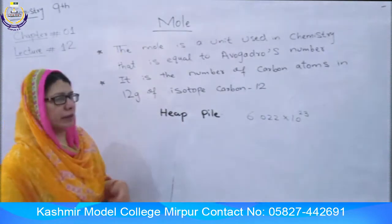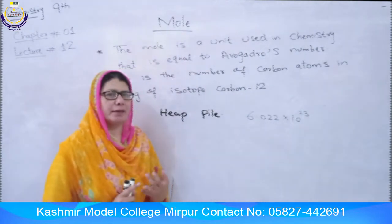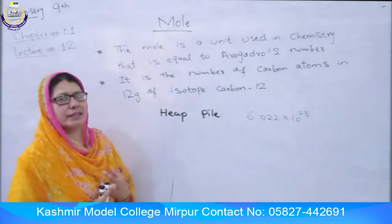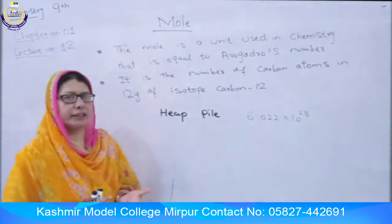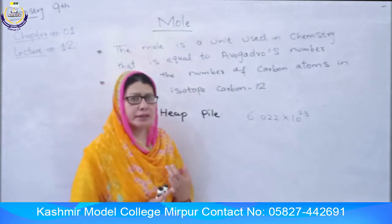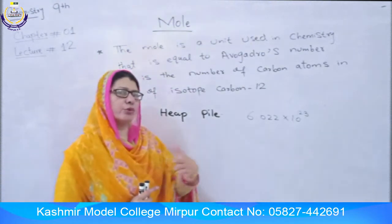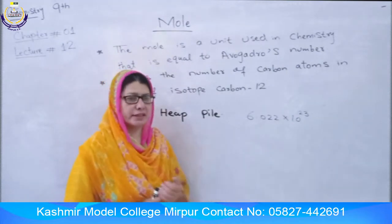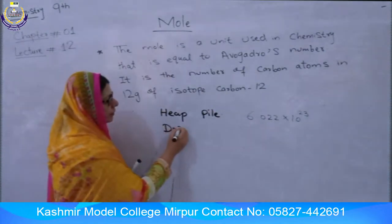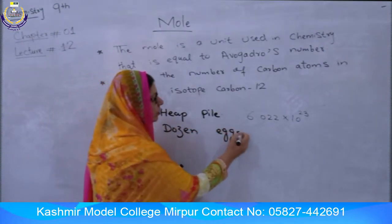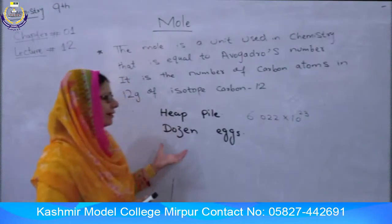For example, when we buy something, we use counting units. We count things by number, not by mass. So for bananas and oranges, what do we use? Dozens.